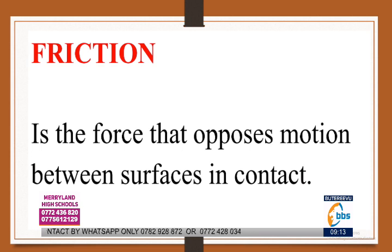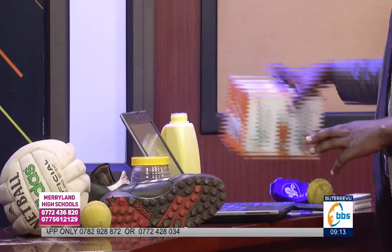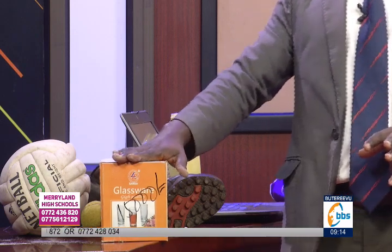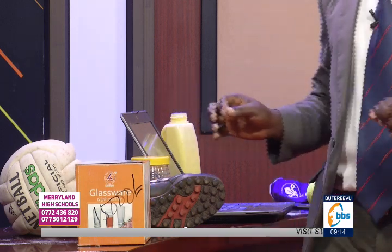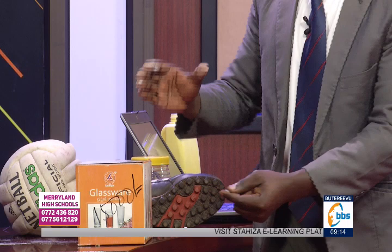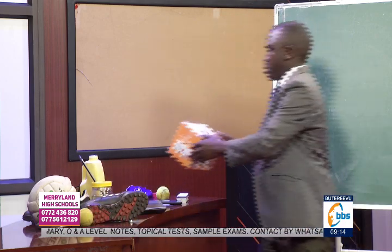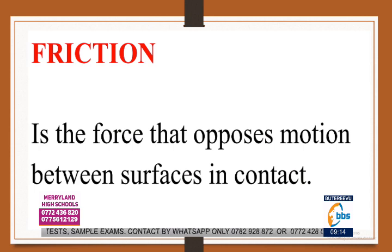Let me show you something. If you get this box here and move it, friction is the force which opposes it. If you're moving it in one direction, friction opposes it in a different direction. The effort you apply takes one direction, but there is another force opposing its movement — that is the friction force. Friction is the force that opposes motion between surfaces in contact.